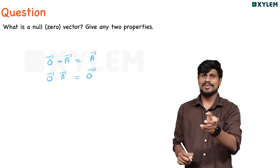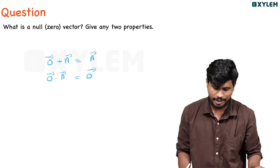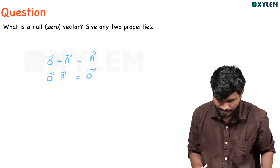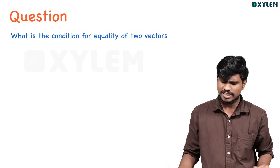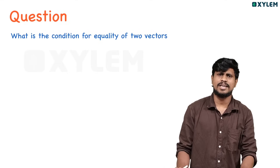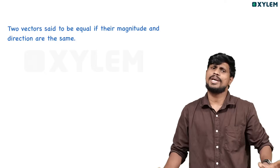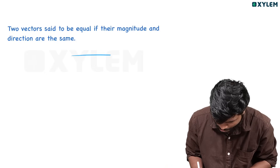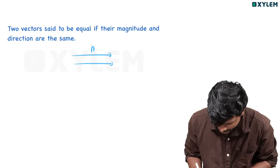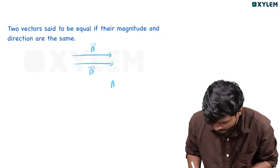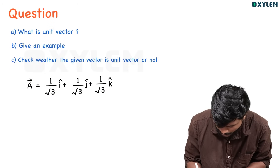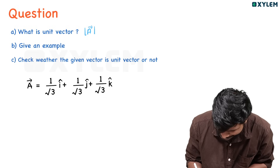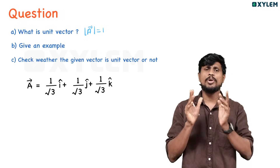Simply 0 plus 1 is 1, is 0 — that is the same thing. What is a condition for equality of two vectors? Two vectors are equal when they have equal magnitude and equal direction.